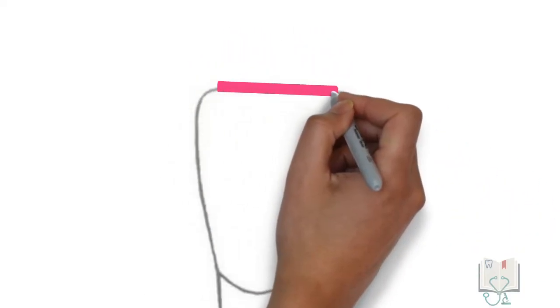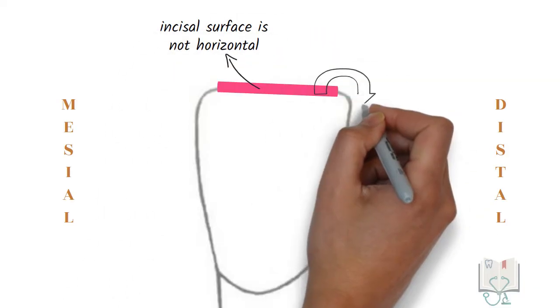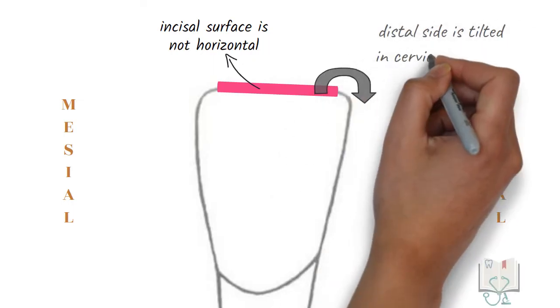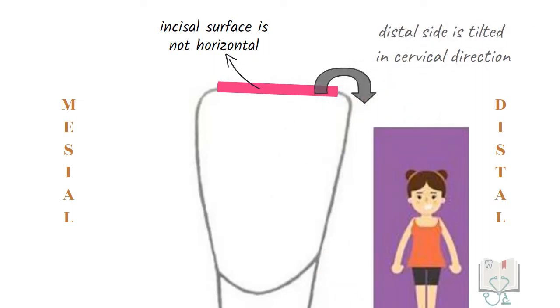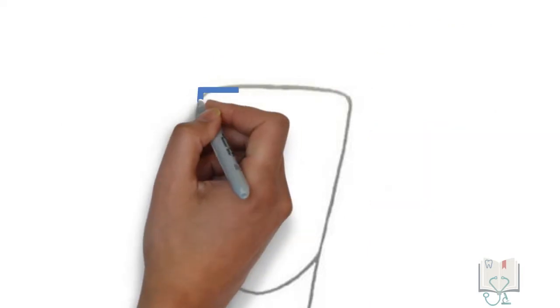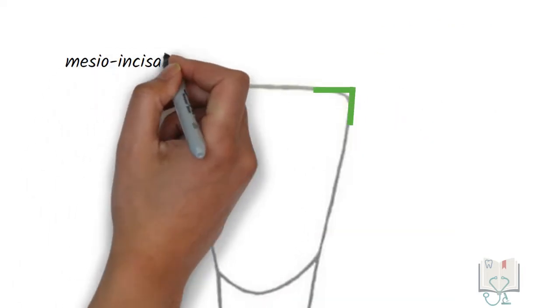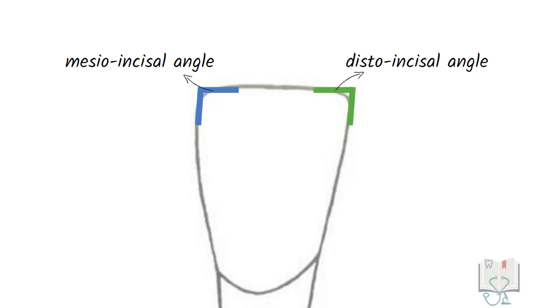The incisal surface is straight but not horizontal. Its distal side is tilted in the cervical direction. This gives the crown a slight tilt on the root. Both incisal angles, mesoincisal angle and distoincisal angle, are equally sharp.